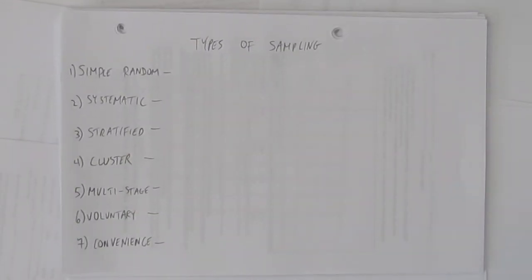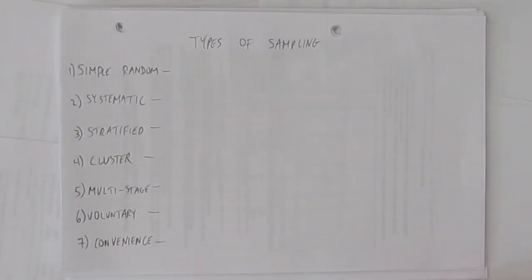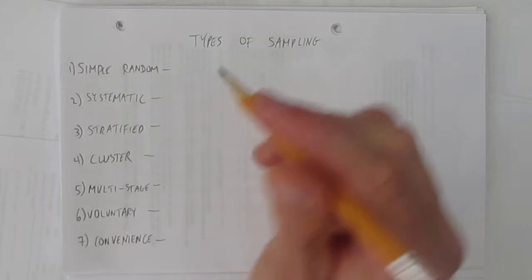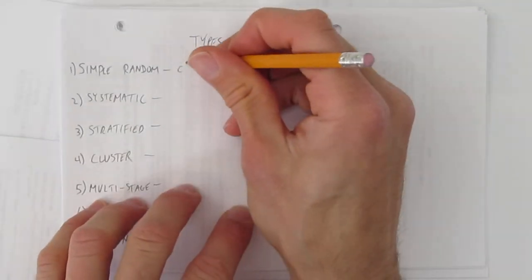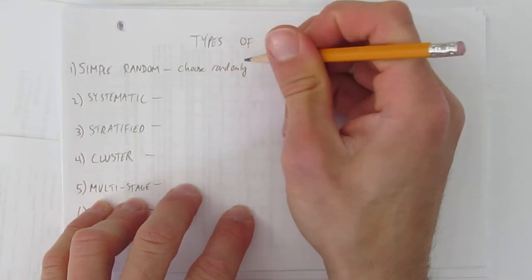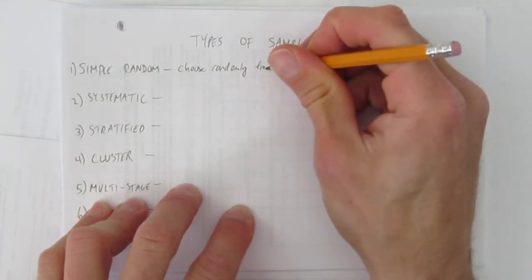In this video, we'll look at different types of sampling. There are seven different types I'll talk about. The first type is called simple random. A simple random sample is where you choose randomly from the population.